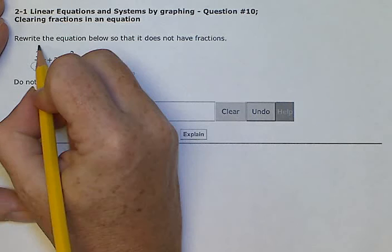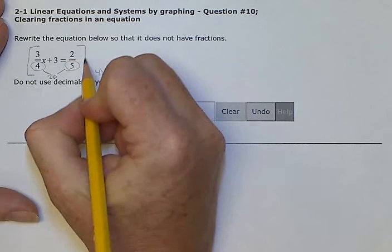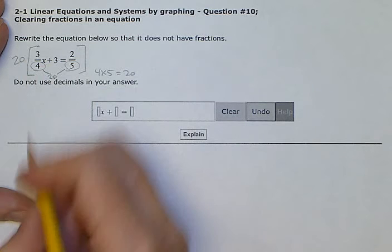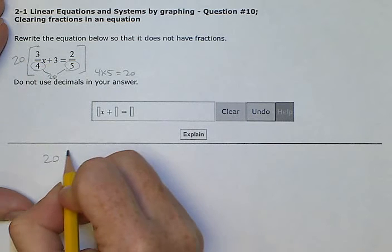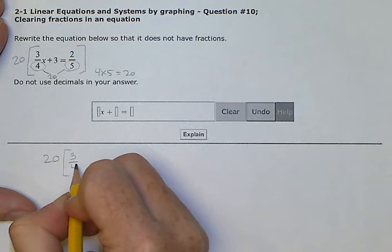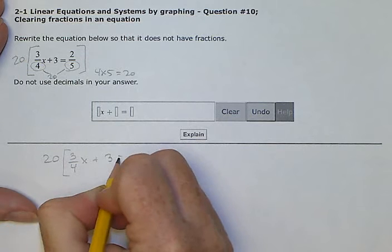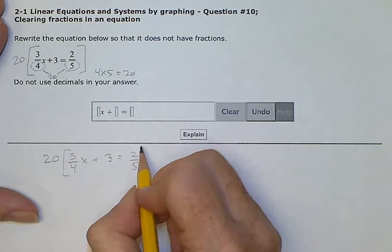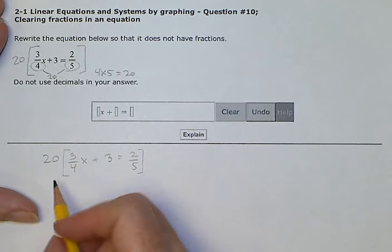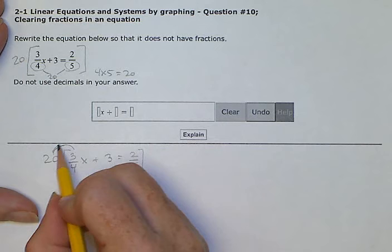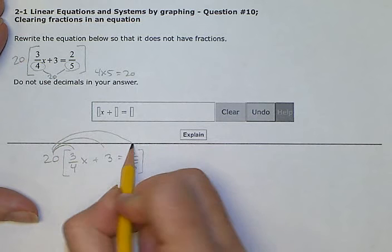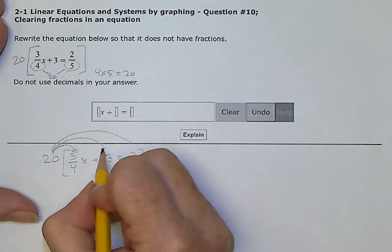So we're going to take our whole equation and multiply it by 20. I'm going to rewrite it down here. 20 times 3 fourths x plus 3 equals 2 over 5. So next I'm going to distribute that 20. That means I have to multiply each term by 20. This term and this term and this term.